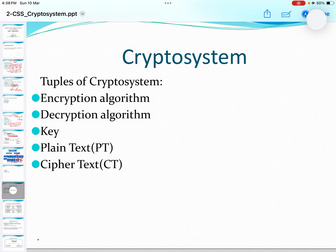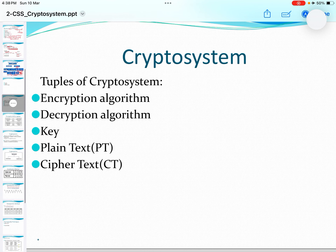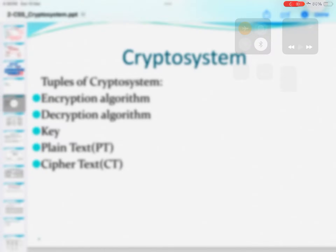Next is types of crypto systems. In types of crypto systems we have: encryption algorithm, decryption algorithm, key, plain text, and cipher text.